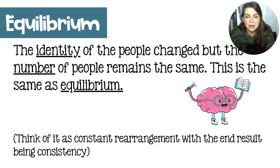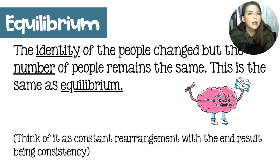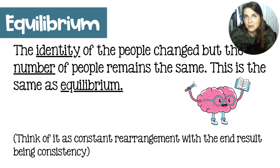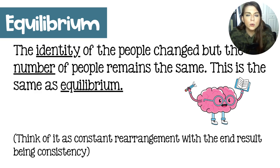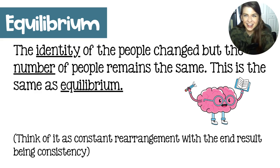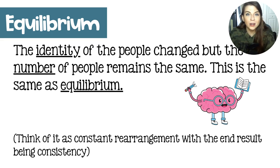That question is an example of equilibrium. The identity of the people on the bus changed, but the number of people on the bus stayed the same, and that's kind of like equilibrium. Equilibrium really is just a constant rearrangement with the end result being the same as it was. This is also kind of like the people who think that they're cleaning when they just organize all of their junk into different piles.